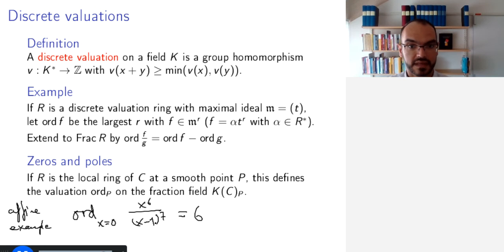And in the local ring, x minus 1 is invertible. So this is 1 divided by x minus 1 to the power of 7 times x to the power of 6. So this is our T. This is the generator of that maximal ideal. And this is invertible in that local ring. So that is the general idea illustrated in a concrete case.